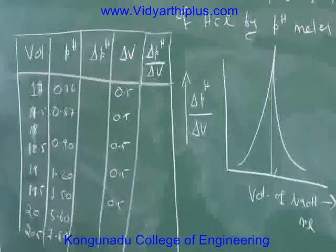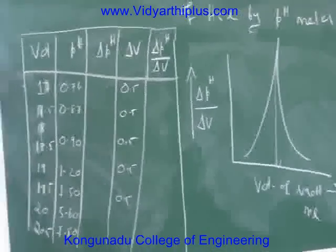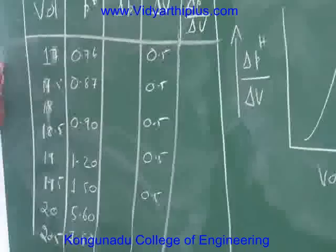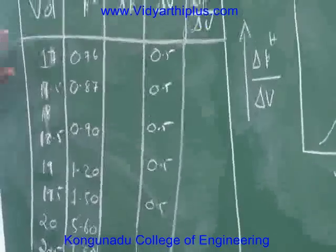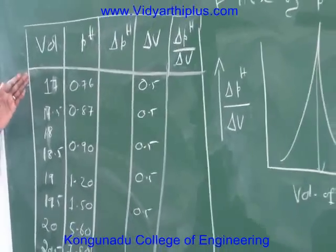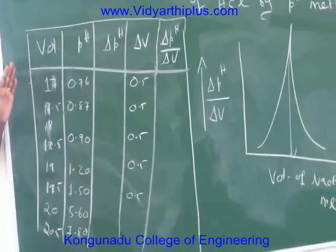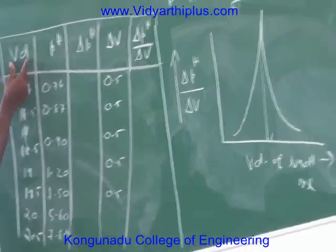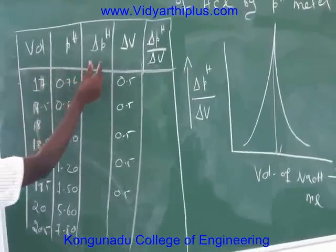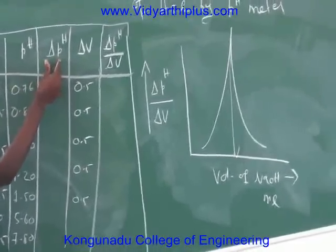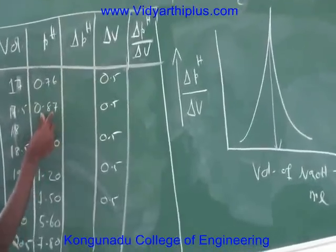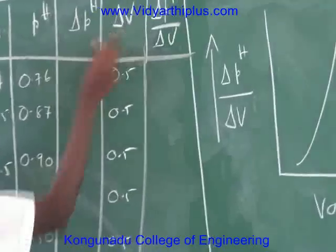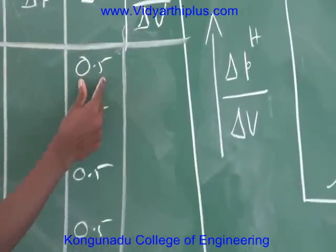To pinpoint the exact end point, we perform a titration again more carefully near the end point. I have plotted the values in a tabulation, recording the volume, pH, del pH (the difference between successive higher and lower pH values), and del V, which is constant at 0.5 ml for all readings.